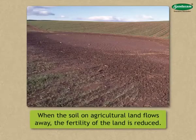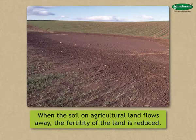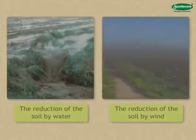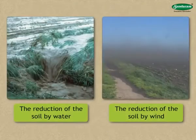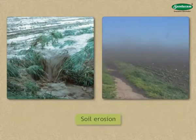When the soil on agricultural land flows away, the fertility of the land is reduced. The reduction of the soil cover on the land by water or wind is called soil erosion.